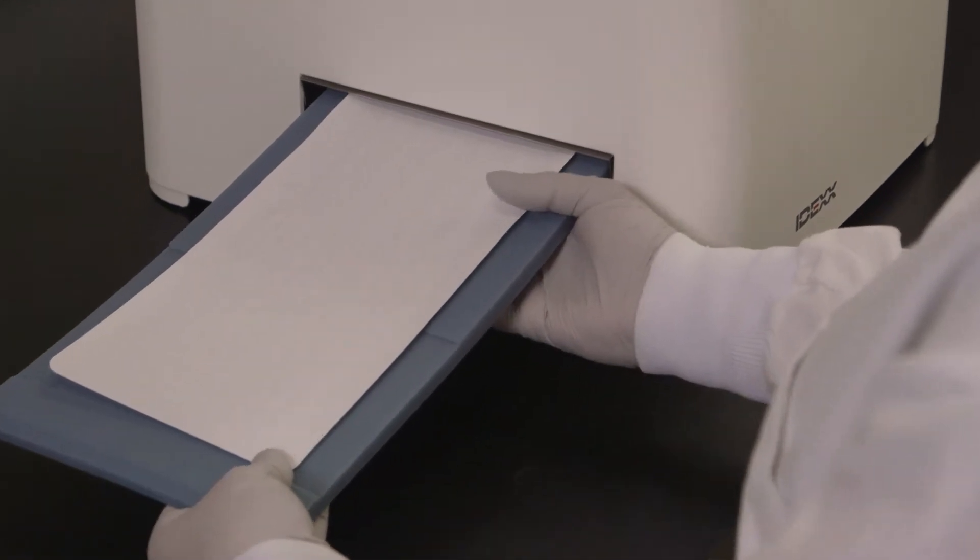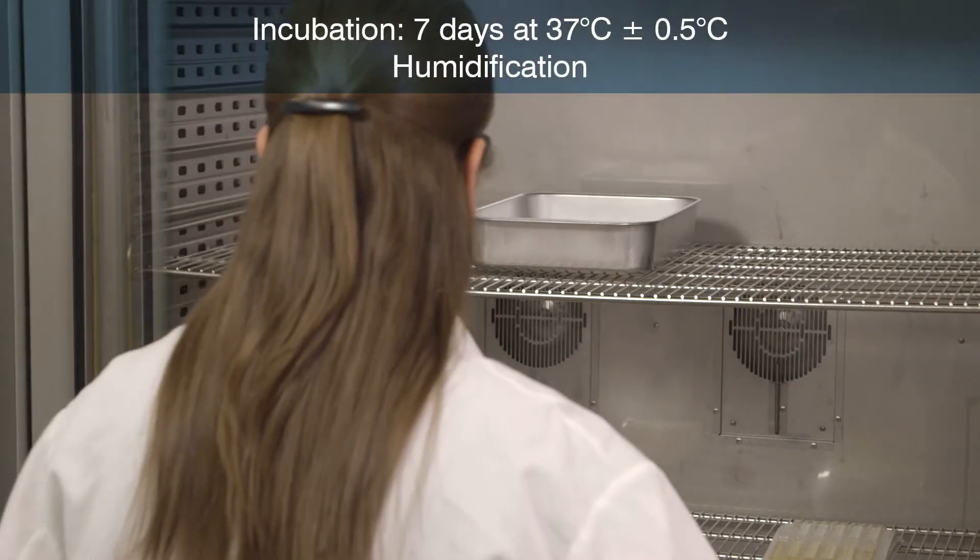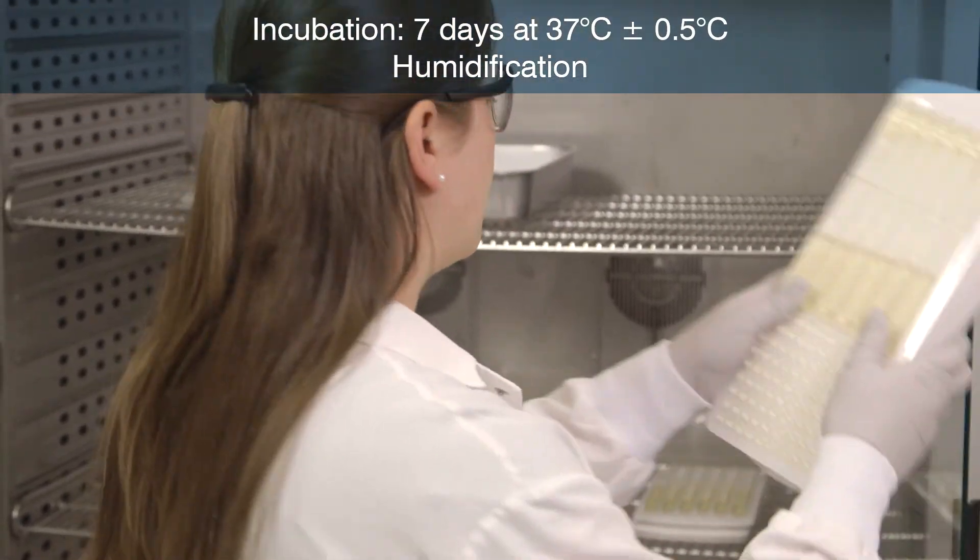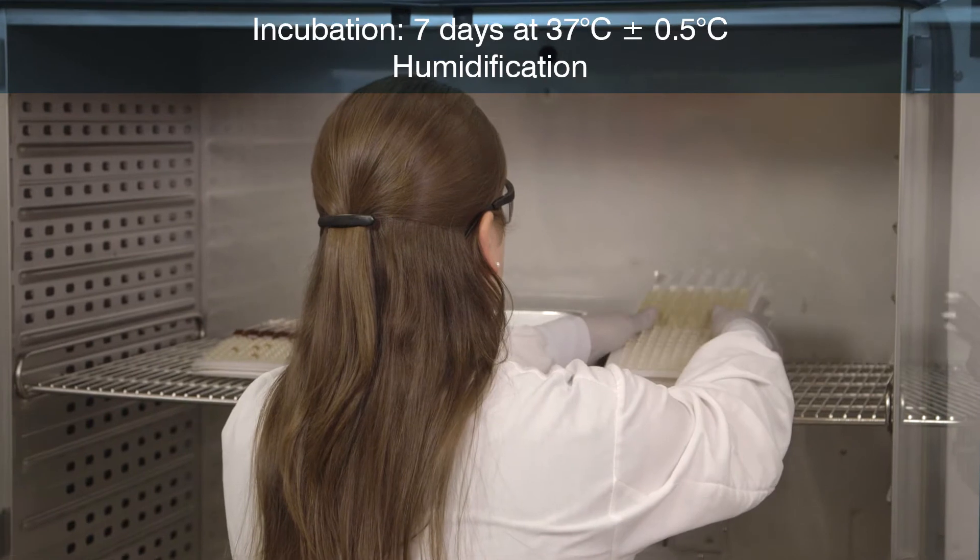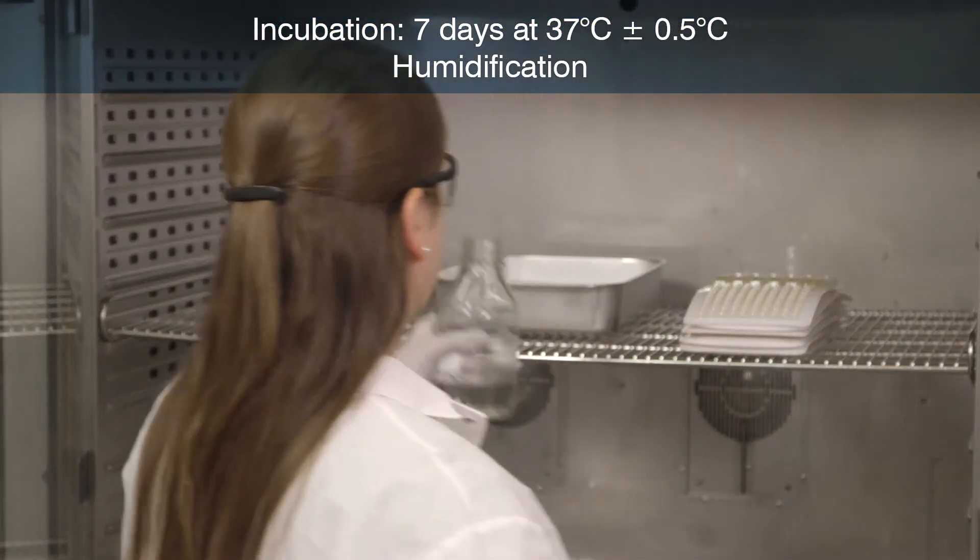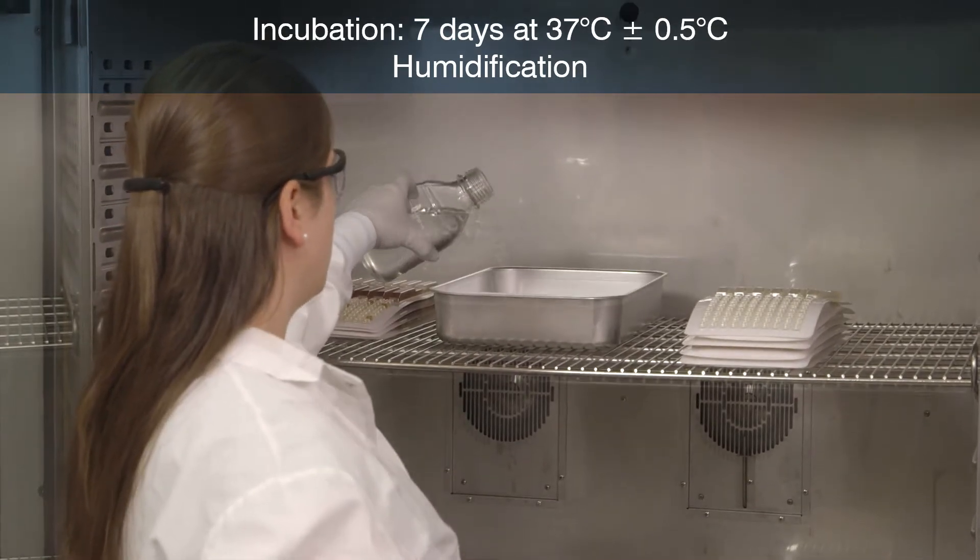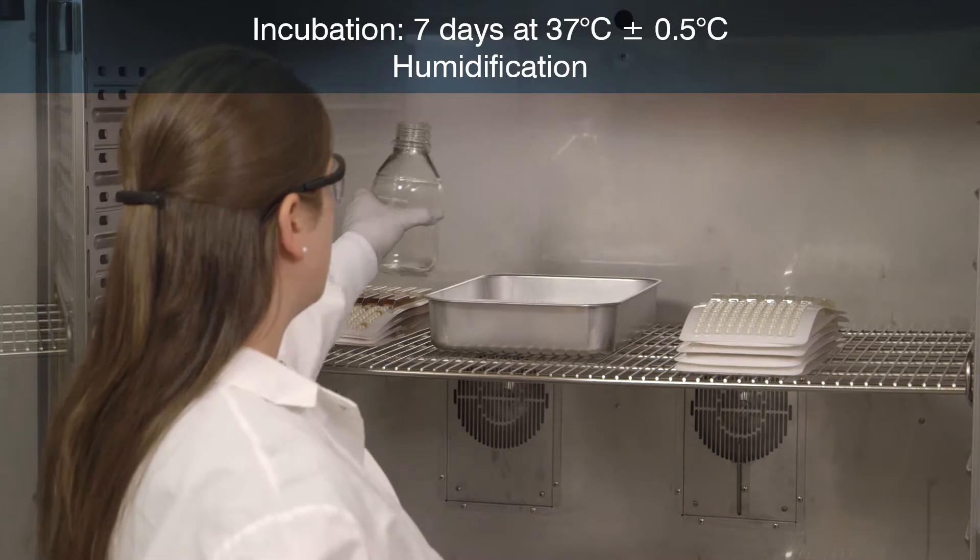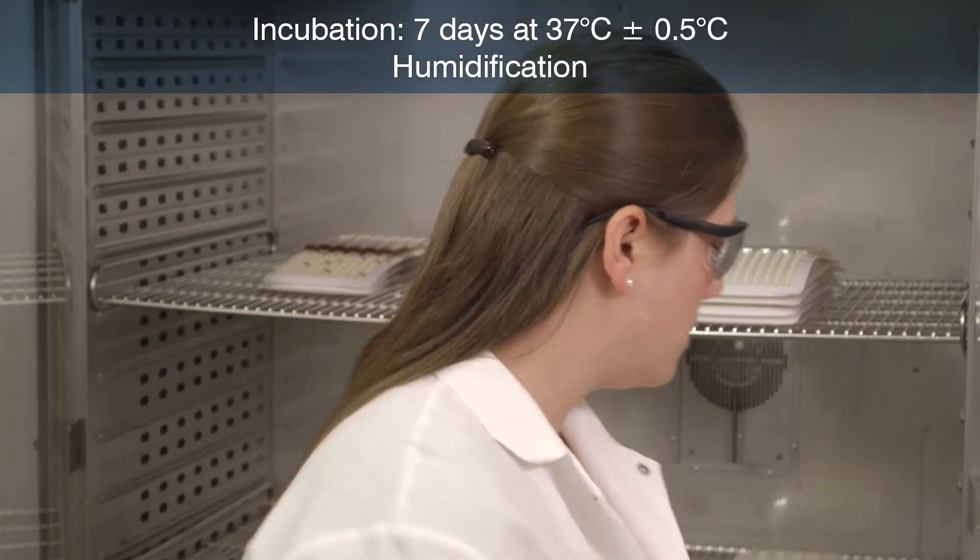Remove the rubber insert and tray from the sealer. Incubate the sealed tray paper-side down for seven days at 37 degrees centigrade, plus or minus 0.5 degrees centigrade. To prevent trays from drying out, humidify the incubator. If stacking trays, alternate tray direction so large wells are placed above small wells.